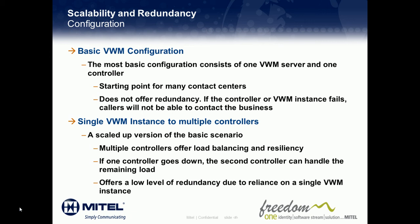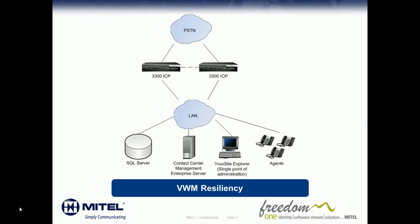The first level of resiliency is provided through a single Visual Workflow Manager instance connected to multiple 3300 ICP controllers. In this configuration, multiple 3300 ICP controllers offer a basic level of load balancing and resiliency. If one controller goes down, the second controller can handle the remaining call load. Because this configuration relies on a single Visual Workflow Manager instance, this is the lowest level of redundancy available for your IVR solution. Here, you'll notice that calls come from the PSTN to two 3300 ICP controllers, with calls load balanced between the two telephone systems.